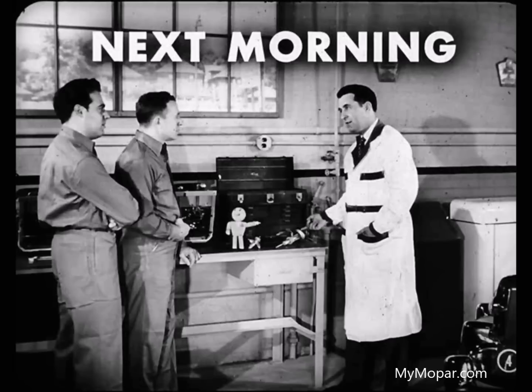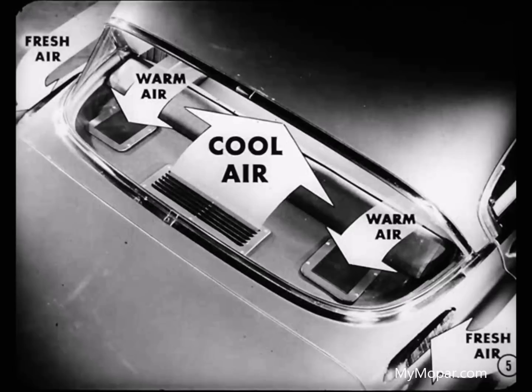Here are some of the units of the Air Temp air conditioner system I was telling you and Fred about last night, Bill. And there's one just like it in that car over there. Now let's get on with the story of how they operate. The basic idea of car air conditioning is to draw the warm air from the passenger compartment and fresh air from outside, filter it, cool it, remove the moisture, and then blow the cooled air back into the car.